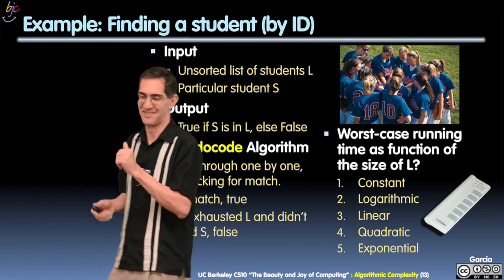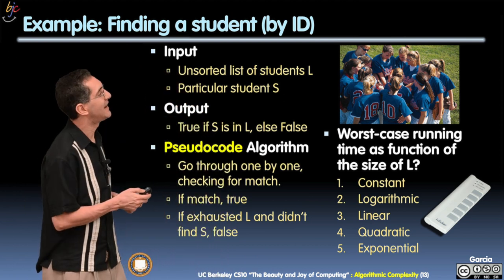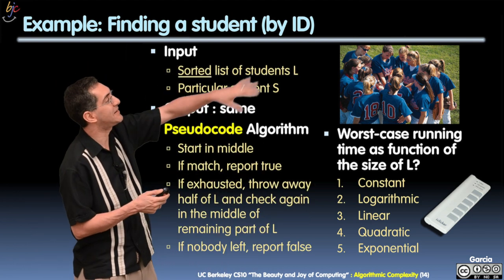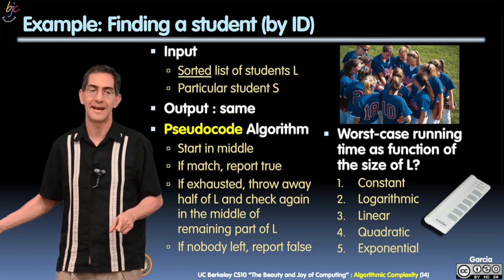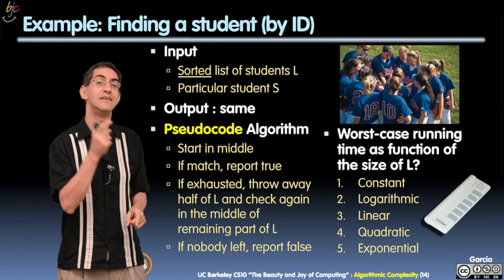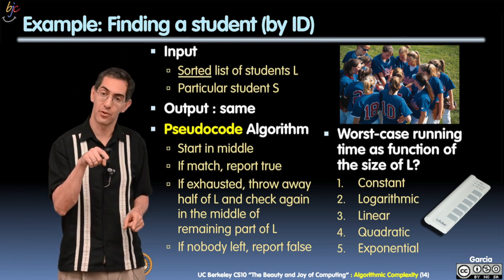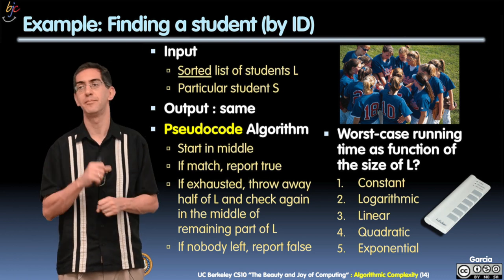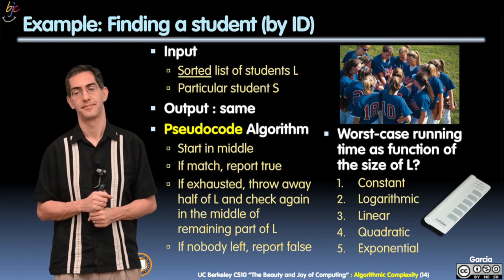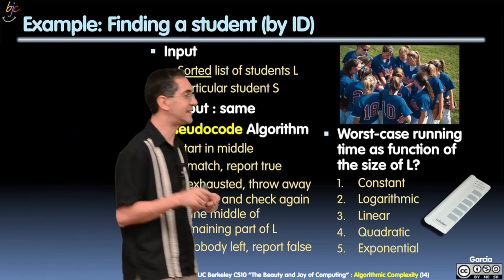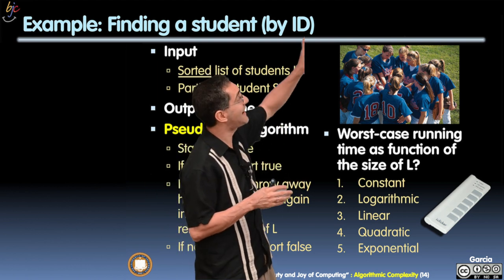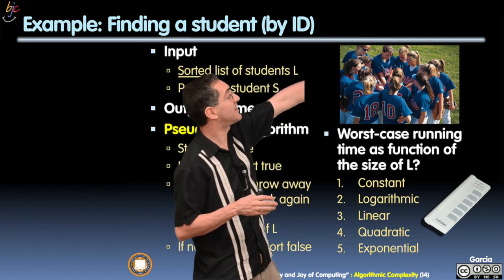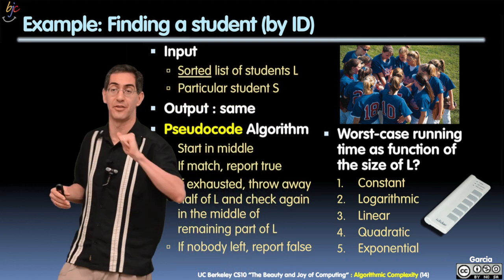All right. Next problem. Notice that same kind of idea, but blink, something starts. Now, my list of students is not unsorted, but sorted. And that means S-O-R-T-E-D, not S-O-R-D-I-D. So it's a very sorted list of students. And now, here's my pseudocode algorithm. Let's look at this. I'll even give you the algorithm. And then you tell me how much time it's going to take.